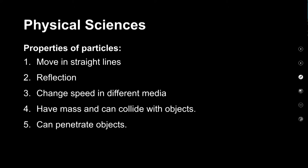Now let's have a look at some of the properties of particles and try to relate them to the properties of waves we've already discussed. Particles also travel in straight lines, and they are also able to reflect. Think of our tennis ball example — the tennis ball will only move in the direction of the force applied to it and will always bounce back off an object it collides with. We have also observed that particles are capable of changing their speed when they move through different media — media being just the plural of medium.